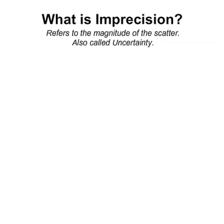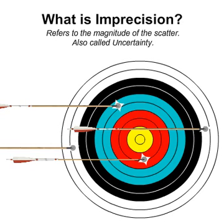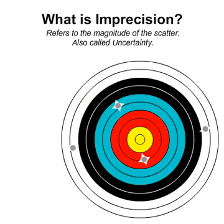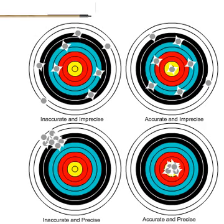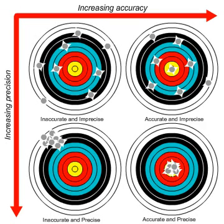On the other hand, imprecision refers to the magnitude of the scatter. Since the arrows in the figure are not tightly grouped together, they are considered imprecise. This figure illustrates further examples of accuracy and precision.